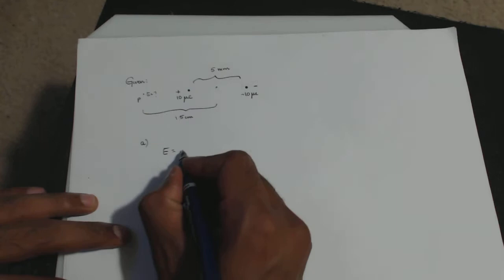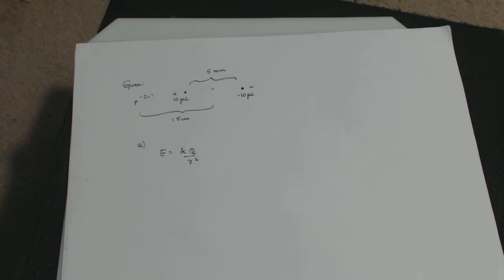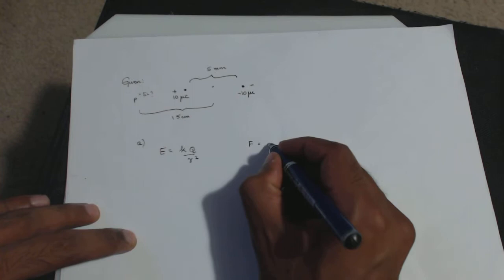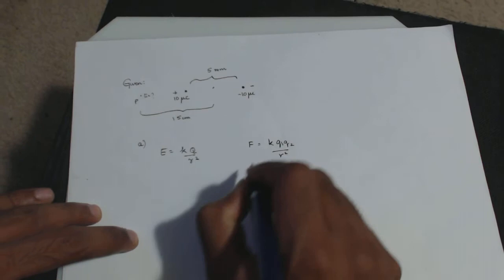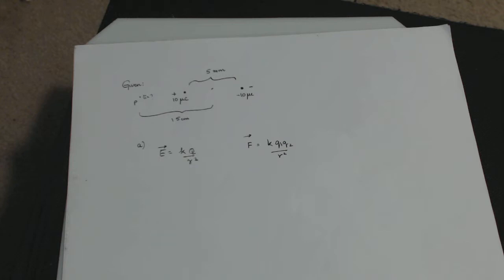The formula for electric field is E = kq / r². Like electrostatic force, the electric field is a vector — it has both a magnitude and a direction. So we need to find both the value and the direction of the field at P.